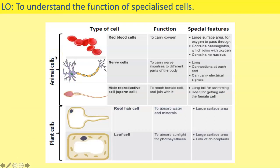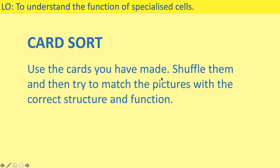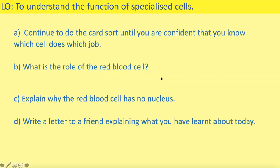This table is on your knowledge organiser and we've now made it into a card sort — you have cards for animal cells and plant cells. Shuffle your cards and try to match the pictures with the names and the correct structure and function. Put them into five different piles for the different types of cell — matching the diagram with the name, structure, and function. Continue the card sort, repeating and shuffling until you are confident that you know exactly which cell does which job.